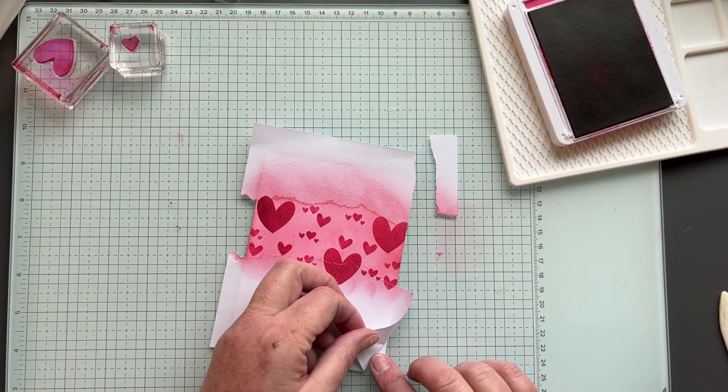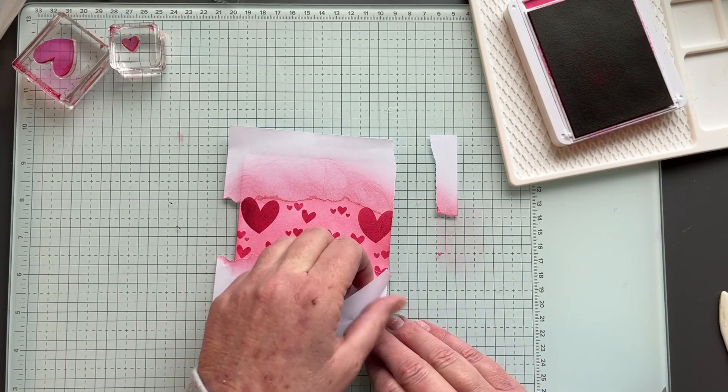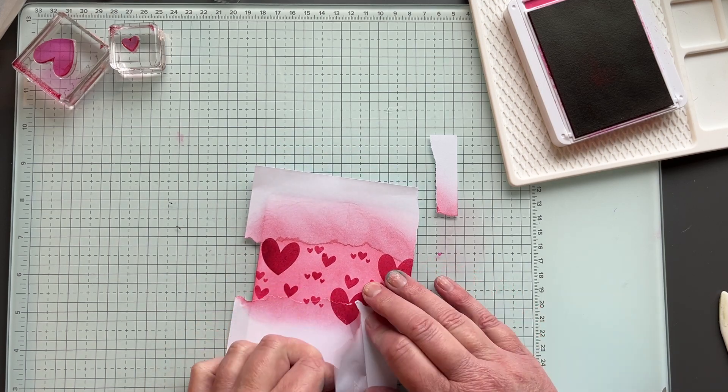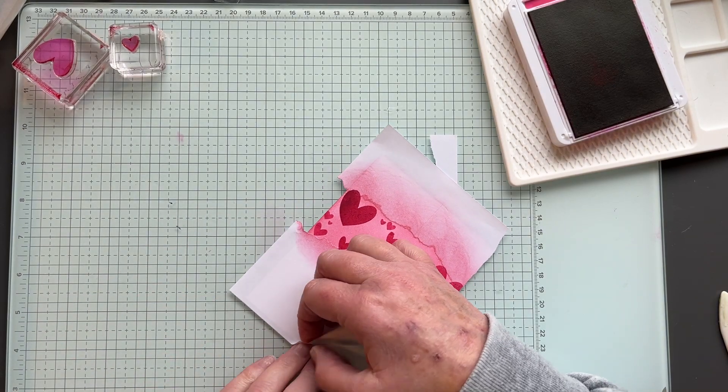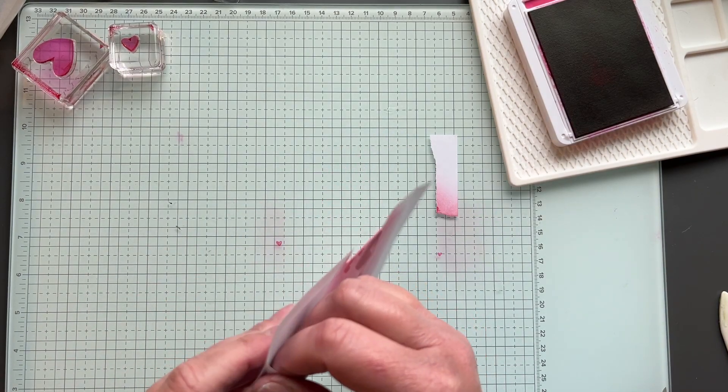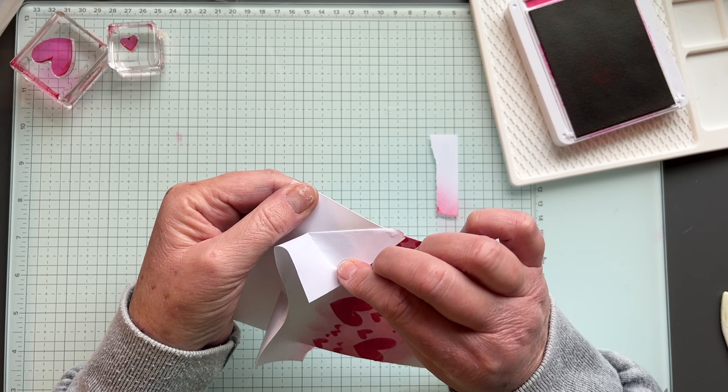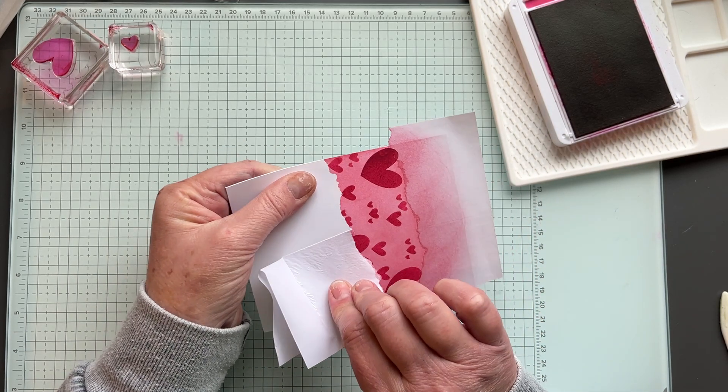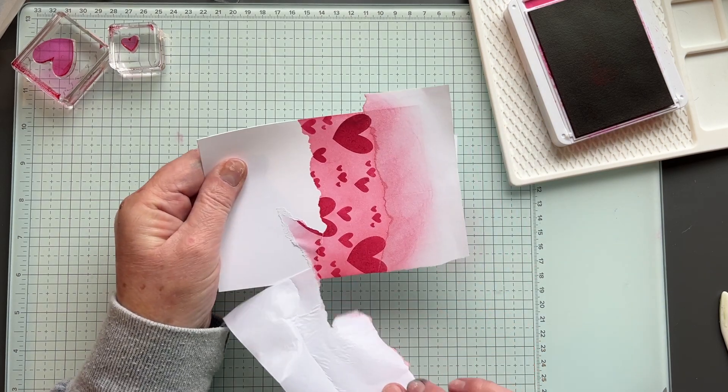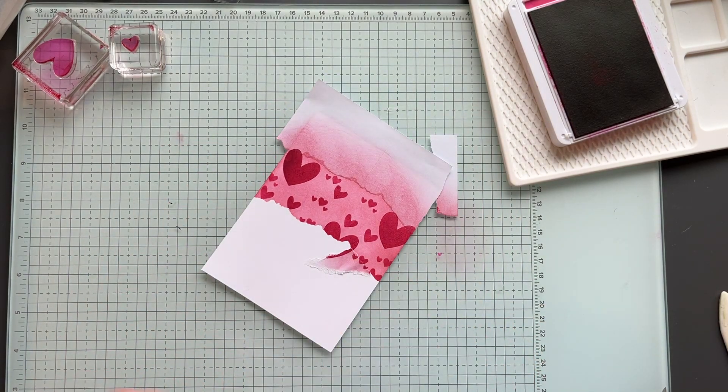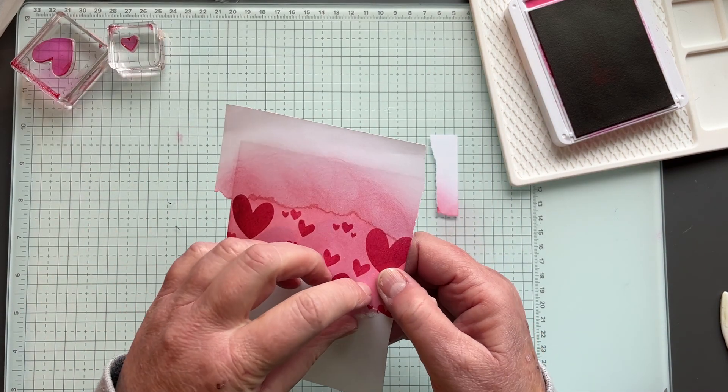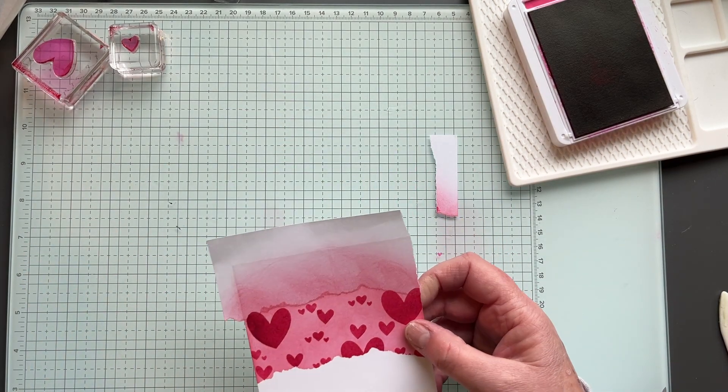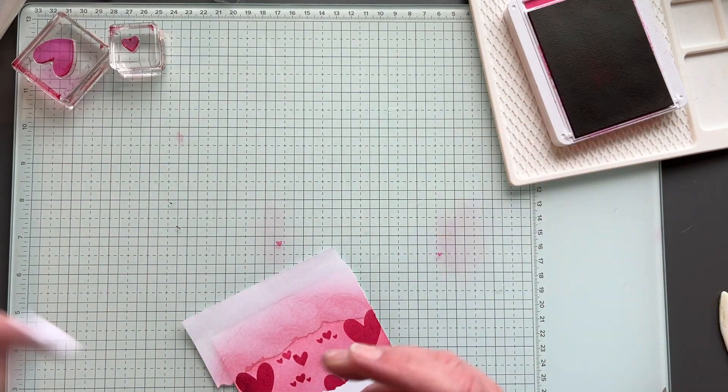So we're done with that. This is my favorite part, the reveal. So you just want to tear this off carefully so you don't tear the cardstock underneath. This is the hardest part of the card. And if you do it carefully, you can reuse your masking paper, but apparently I can't do it carefully.